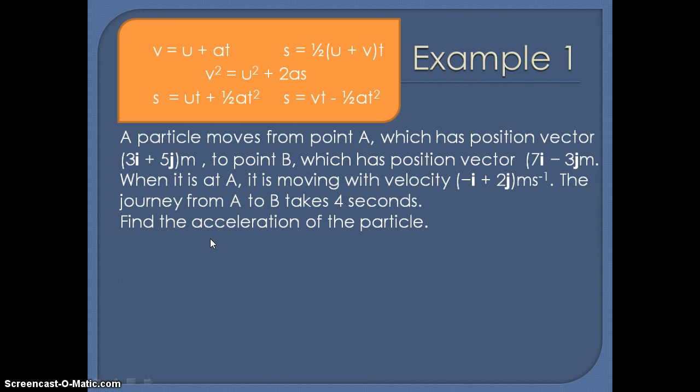So we already know we need to consider our SUVAT equations. So let's consider what we know. We've been given these two position vectors. They don't actually tell us any of the five things from the SUVAT equations, but they do help us work one of them out.